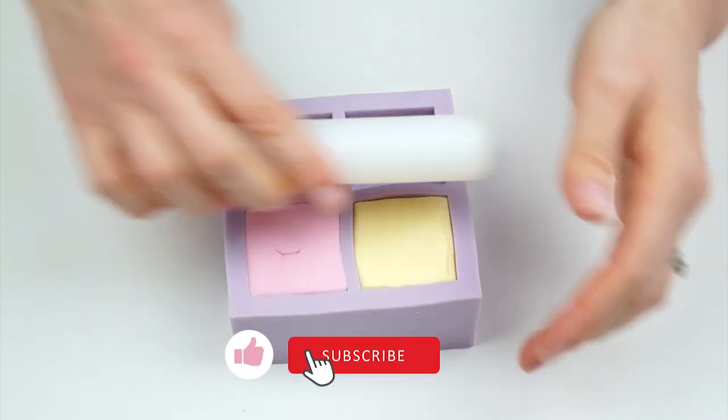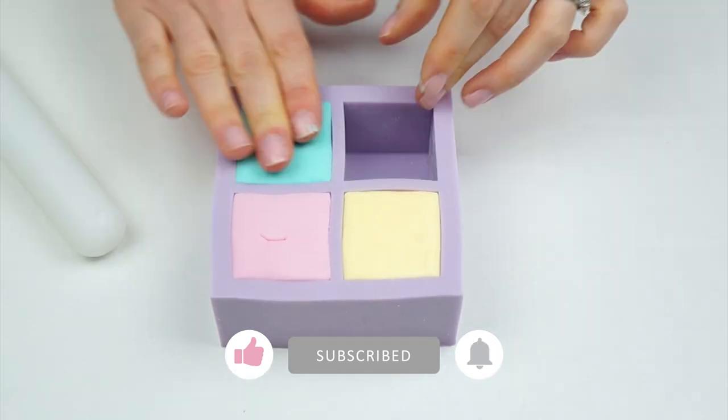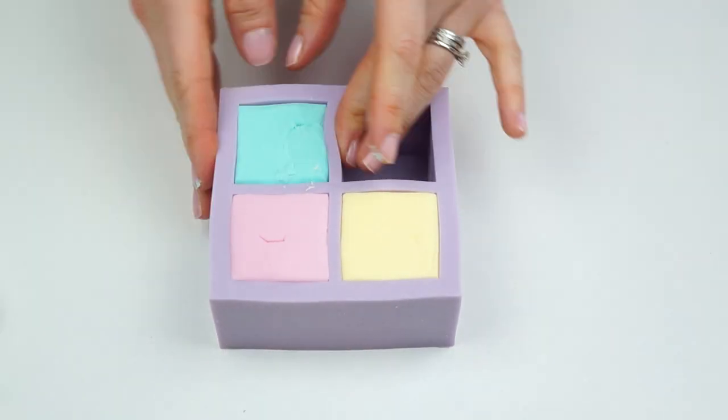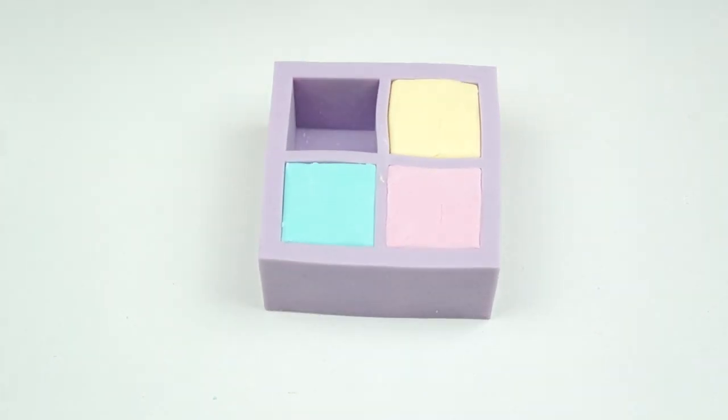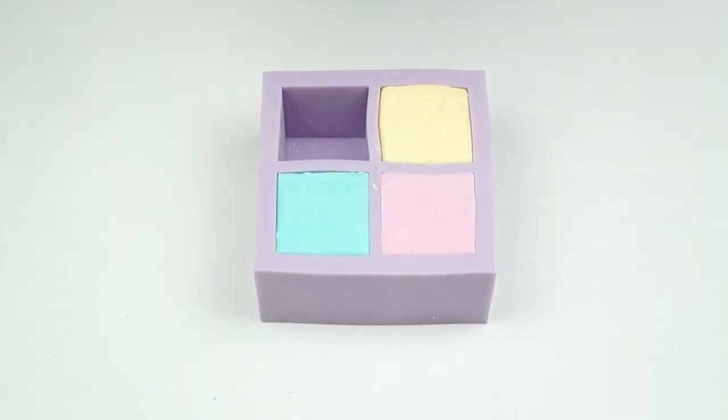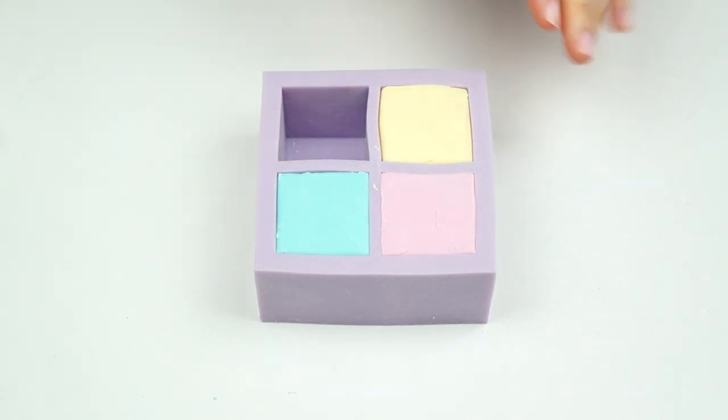I can then do exactly the same for my other two colors. Now as well as using modeling paste you can also add in some colored candy melts or chocolate to give you that nice cube. Once all of our colors have been added into our mold we need to pop this in the freezer for around 20 to 30 minutes. This is just going to firm up those blocks and allow us to get them out of the mold.